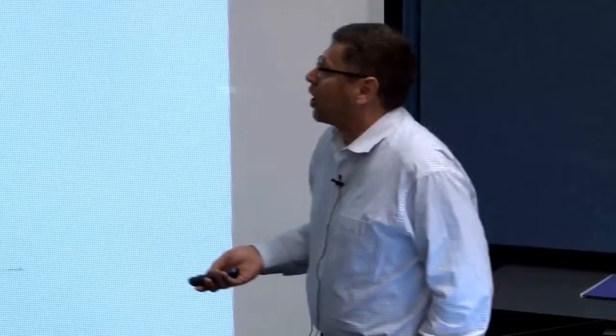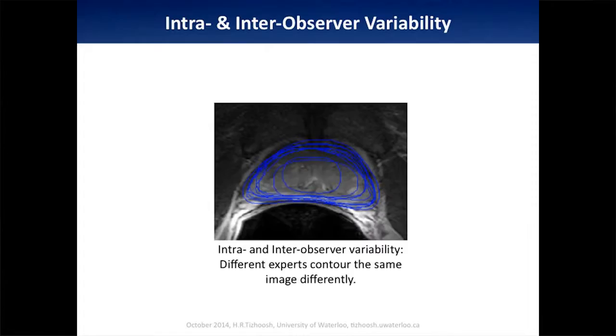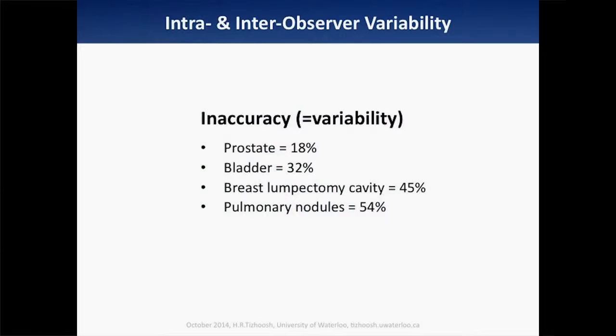One of the biggest problems in clinical everyday work is intra-observer variability. Take a very simple task: give a prostate gland — not a tumor, just a prostate — to five doctors and ask them to contour it twice. Look how different the results are. Who is right? Nobody knows. If this is for treatment, what happens? That's one of the reasons 15,000 people die in the US because of CT overdose. Inaccuracy — variability — for the prostate is up to 18% difference between experts, bladder 32%, and up to 54% for something really critical such as the lung. We don't have a solution; we are working blindly. But since we don't have anything better, nobody complains.